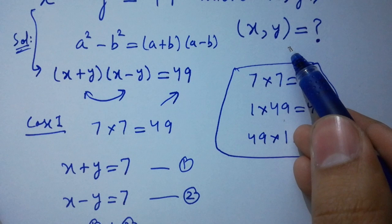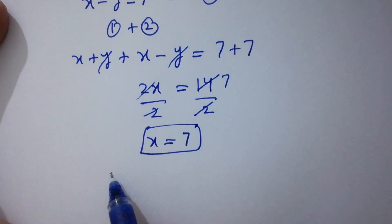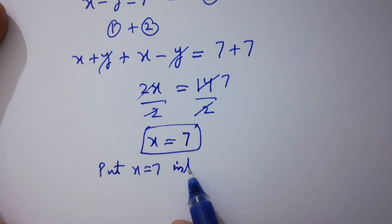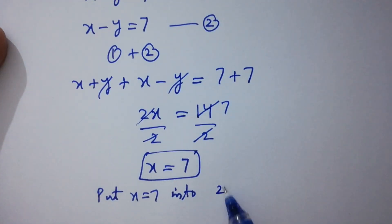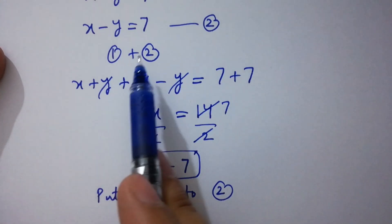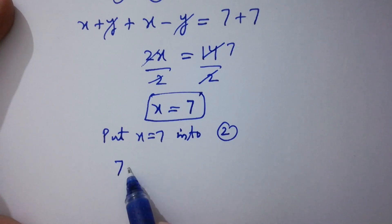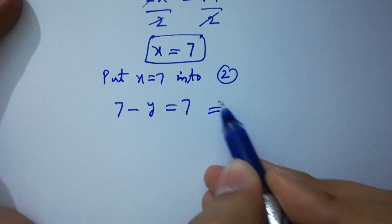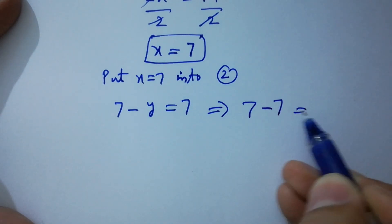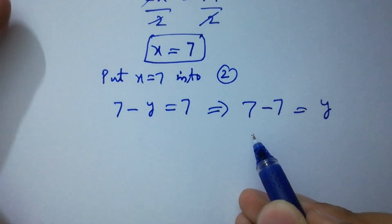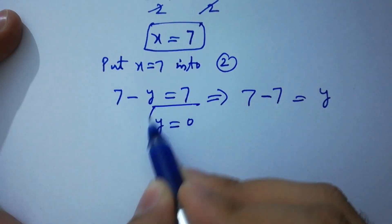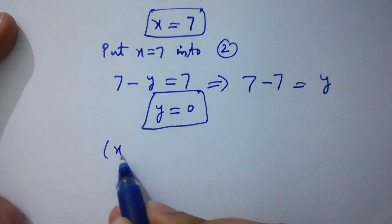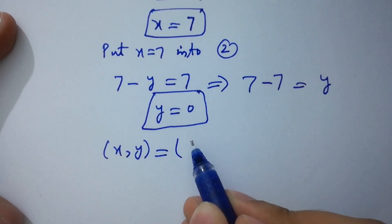Now we want the value of y. Substituting x equal to 7 into the second equation, x minus y equal to 7, we get 7 minus y equal to 7. This gives 7 minus 7 equal to y, so y equal to 0. Our first solution is x equal to 7, y equal to 0.